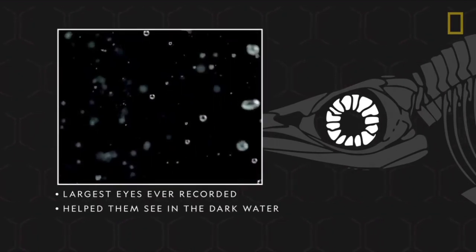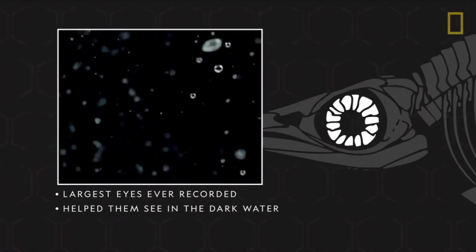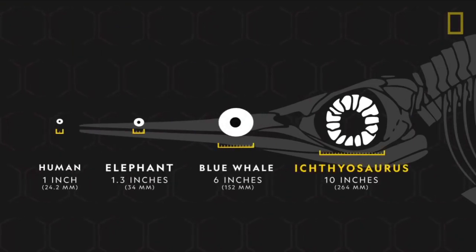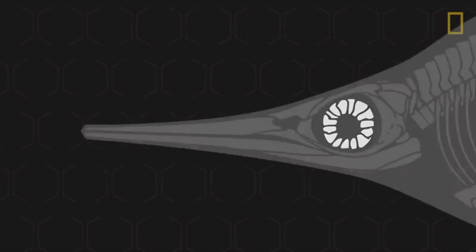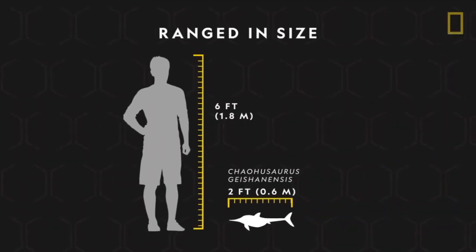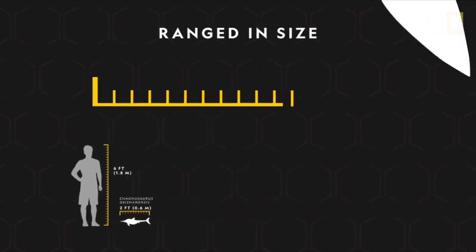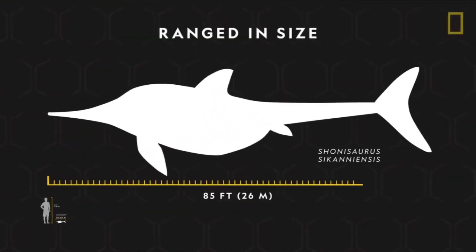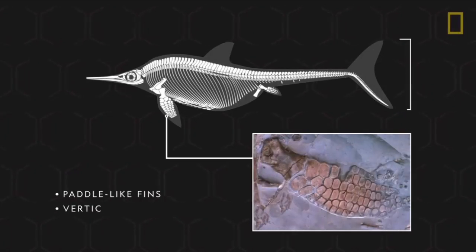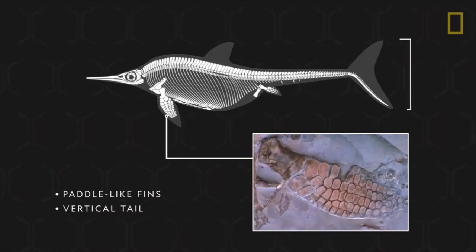In fact, one species had eyes that were over 10 inches. Their bodies ranged in size — some barely reached 2 feet in length, while the longest specimen was 85 feet long. They also had paddle-like fins and a vertical tail to help them swim at 22 miles per hour.